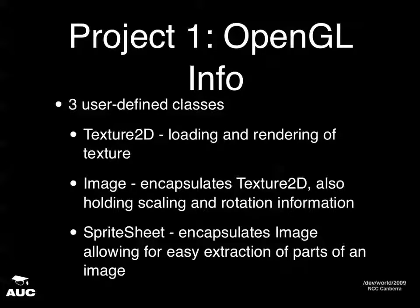In my OpenGL implementation I've got three user-defined classes: Texture2D for loading and rendering an image; Image, which encapsulates that class and holds additional info like scaling, rotation, and alpha blending; and SpriteSheet, which stores an image and specifies information about the distances between each sprite and spacing. These are classes that make performing these extractions easier.